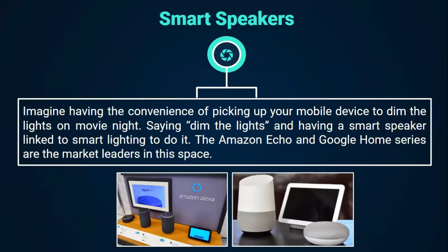Smart speakers. Imagine having the convenience of picking up your mobile device to dim the lights on movie night. Simply saying "dim the lights" and having a smart speaker linked to smart lighting do it sounds ideal. The Amazon Echo and Google Home series are the market leaders in this space of smart home technology.